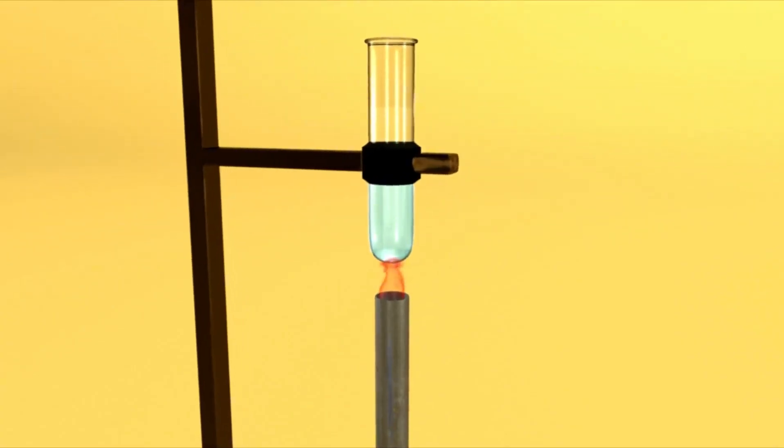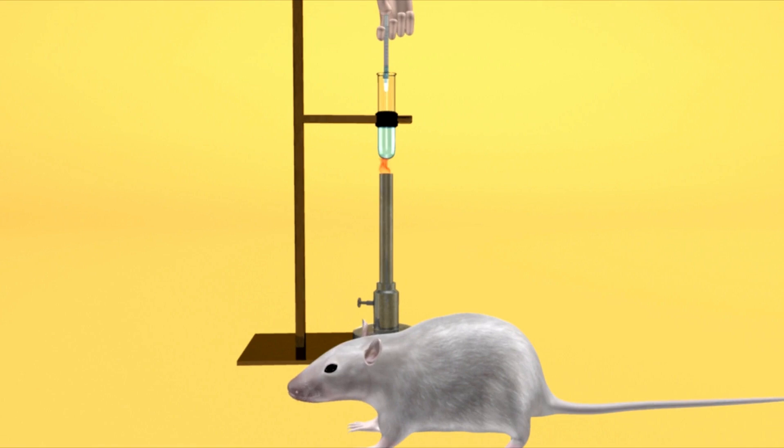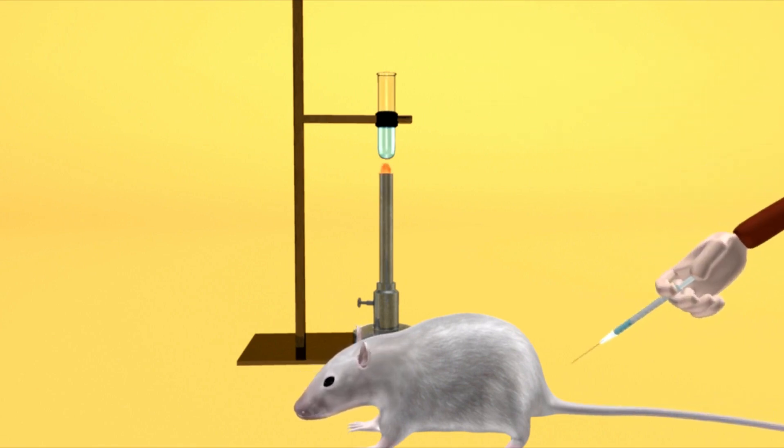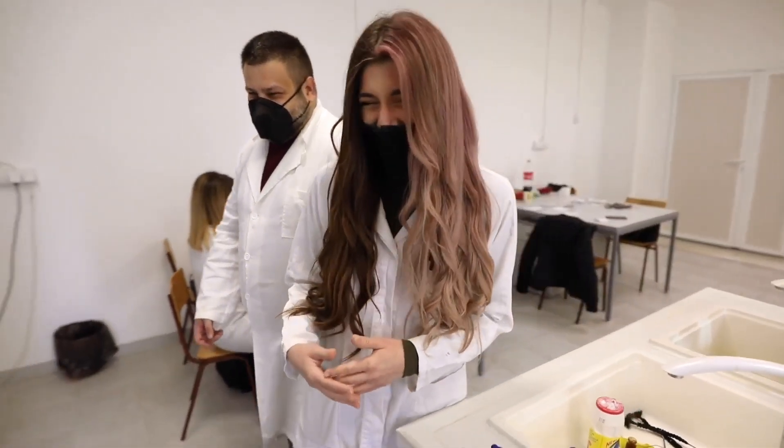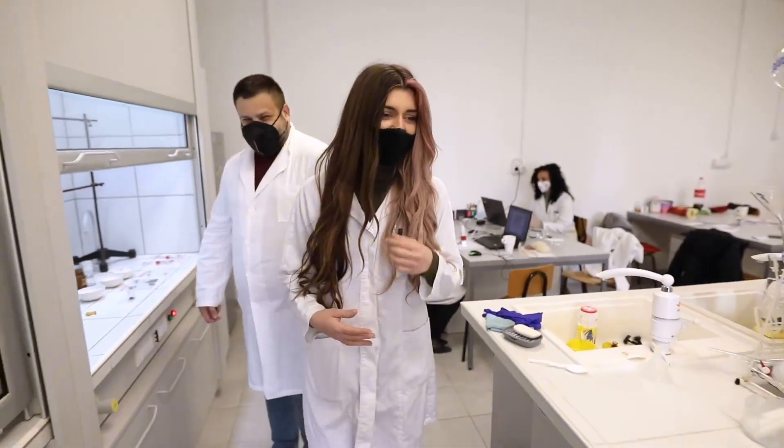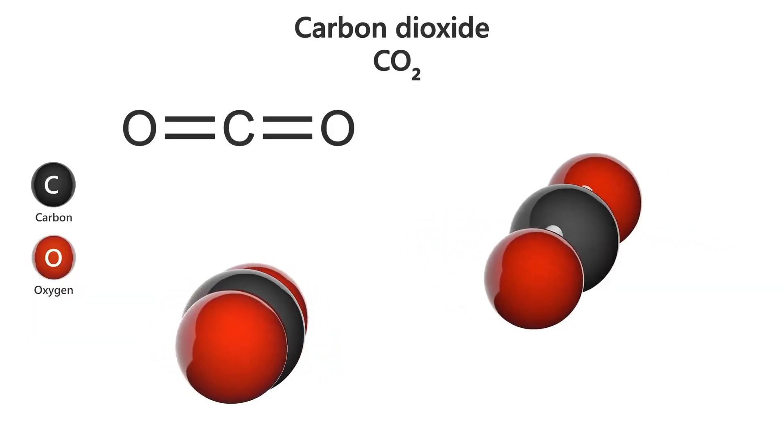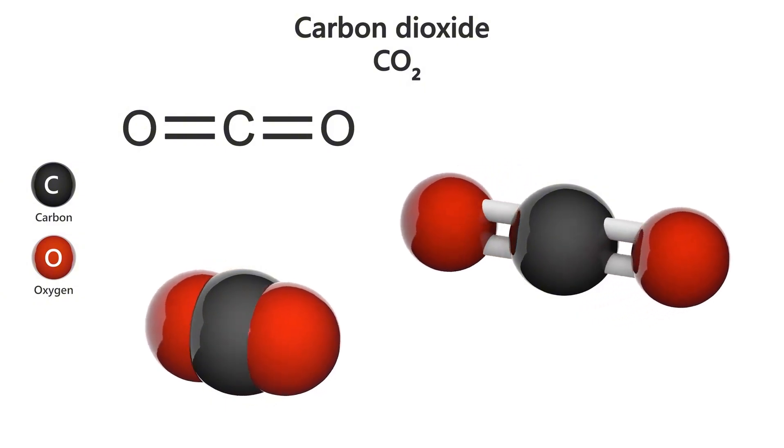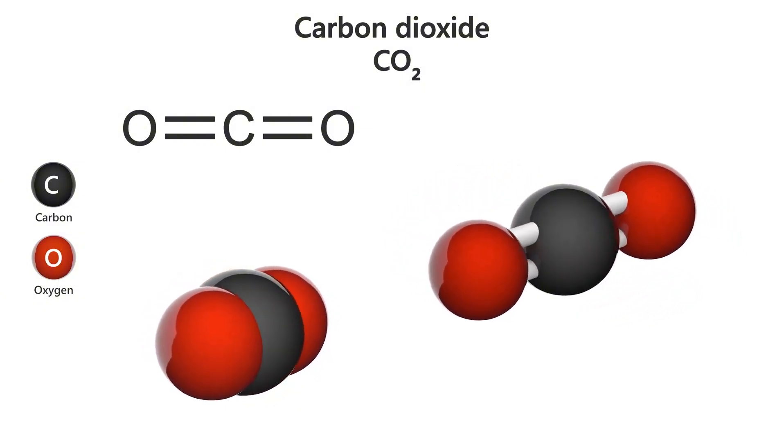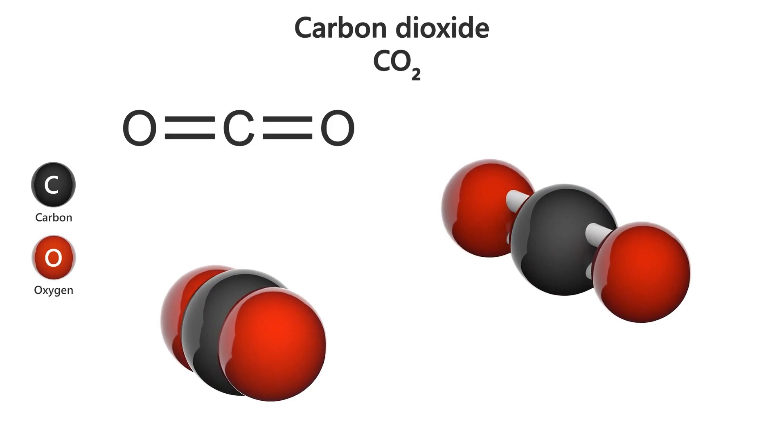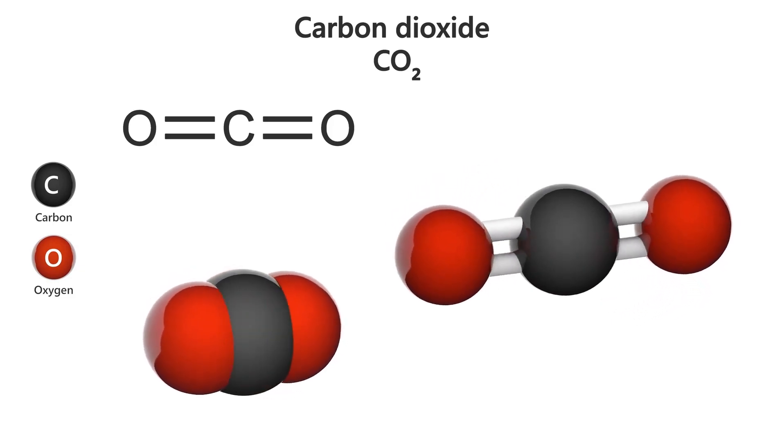Fortunately, K2-18b's host star is a red dwarf that emits less heat than our Sun. This is crucial because it means that despite the planet's proximity to its star, its surface isn't completely scorched. In fact, this lower luminosity could turn out to be a benefit, as it has allowed scientists to detect vaporized water in the planet's atmosphere. This discovery adds to the growing evidence that K2-18b might just have the conditions necessary to support life.